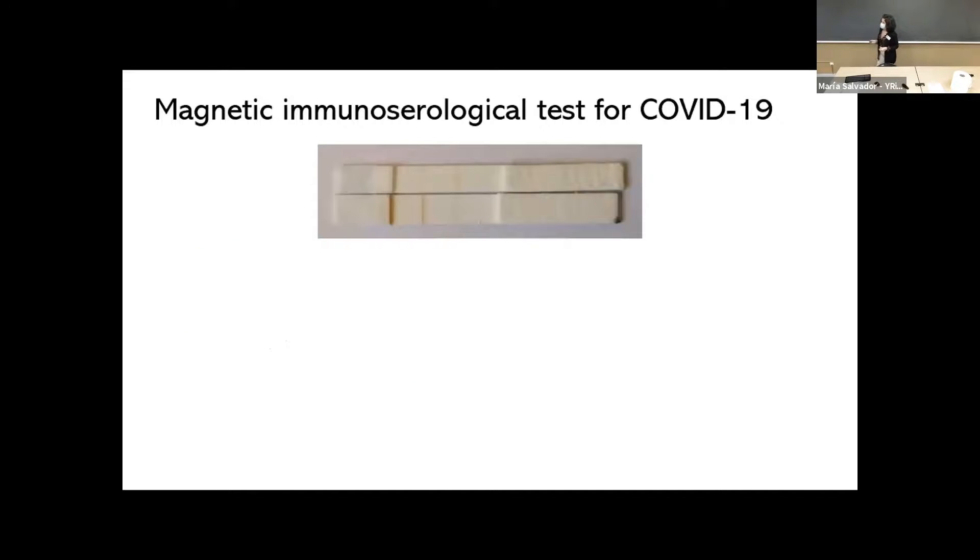And here you have the results. Here at the top, you can see a strip without any antibodies in the sample. And here the second one is a strip that has antibodies in the sample. So you can see how in the positive there is a considerable increase in the intensity of the test line, meaning that we are detecting something.